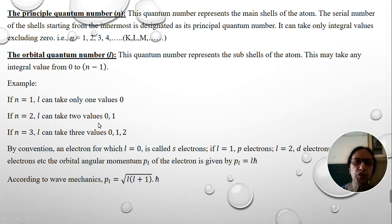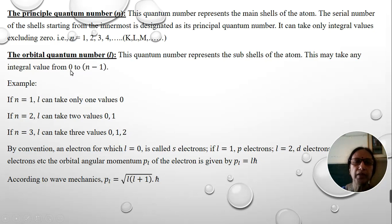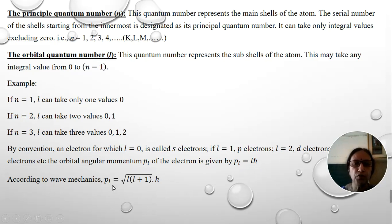In the second orbit, l can take two values: 0 and 1, so the second orbit has two subshells — s and p. For n=3, l can take three values: 0, 1, and 2, giving three subshells: s, p, and d. The angular momentum corresponding to the orbital quantum number is given by Lℏ, and according to wave mechanics it is written as √(L(L+1)) ℏ.